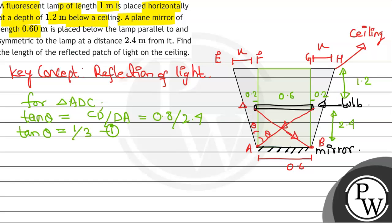For triangle EFA, tan theta equals EF over FA, which is X over 1.2 plus 2.4, which equals X over 3.6. Let's take this as equation 2.